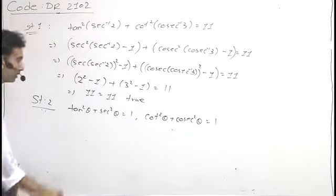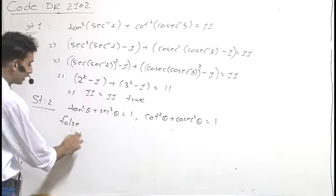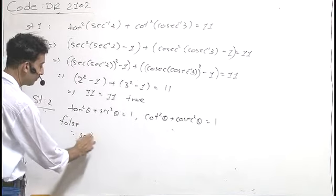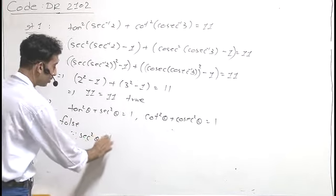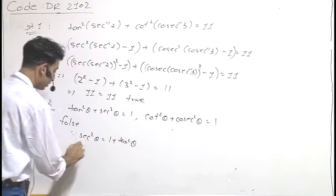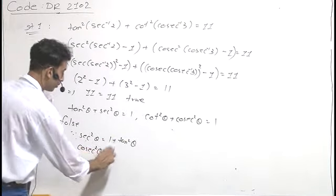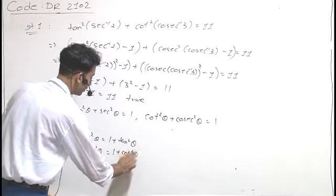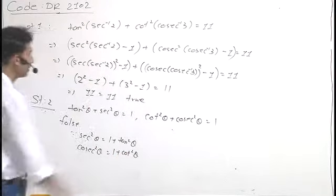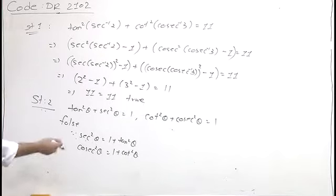Statement 2 is clearly false, since sec²θ equals 1 plus tan²θ, not the given form, and 1 plus cot²θ equals cosec²θ. So Statement 1 is clearly true and Statement 2 is clearly false. That is the required answer to this question.